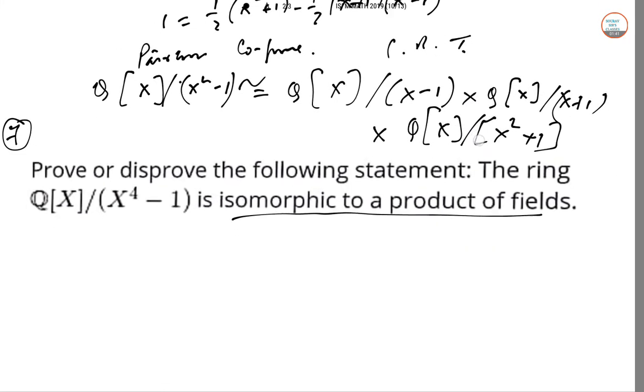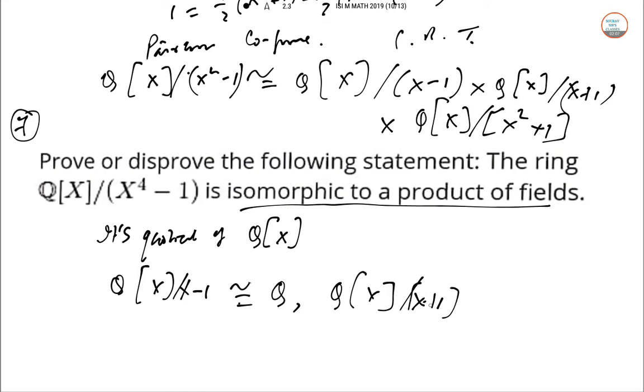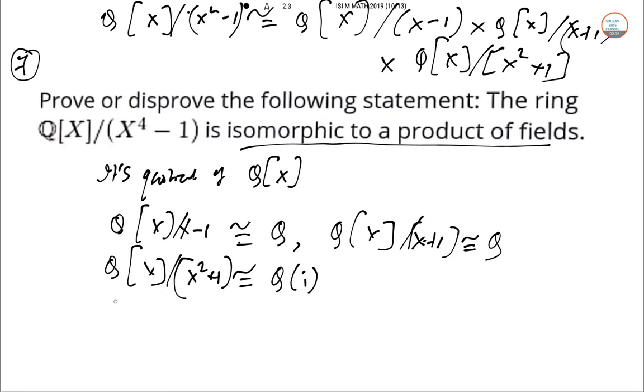So now each of the factors on the right-hand side is a field, as it is a quotient of Q[X] by an irreducible polynomial. So the ring Q[X]/(X⁴-1) is actually isomorphic to a product of three fields.